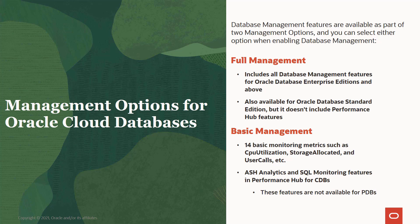For basic management, you get basic metrics — 14 basic metrics such as CPU utilization, storage allocated, user calls, etc. You also get ASH Analytics and SQL monitoring features in Performance Hub for container databases. Note that these features are not available for pluggable databases.